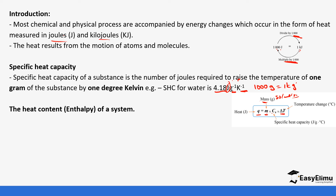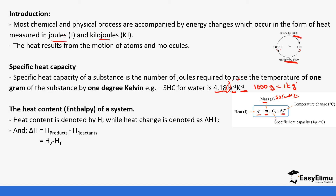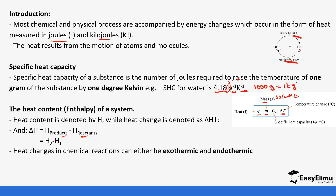The heat content or enthalpy of a system — you will hear us talking about enthalpy, heat change, or heat content — is denoted by H, and the heat change is denoted by ΔH. The enthalpy change is usually equal to the energy of products minus reactants. Heat changes in chemical reactions can either be exothermic or endothermic.